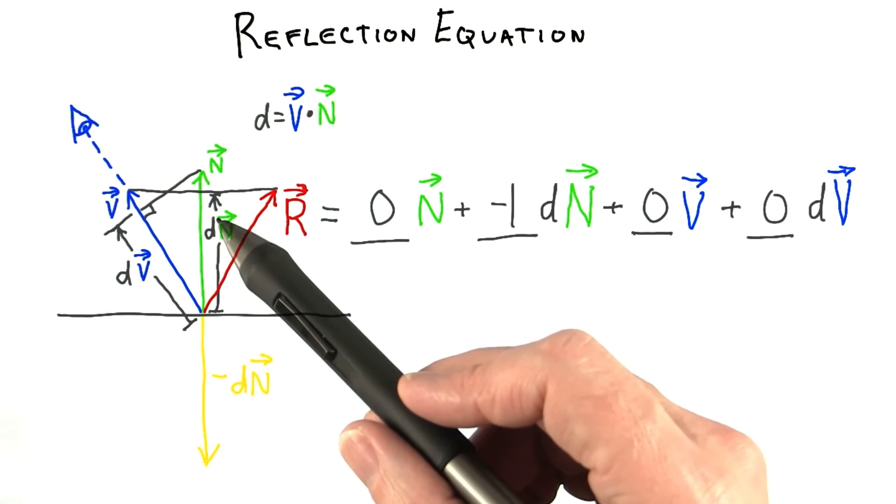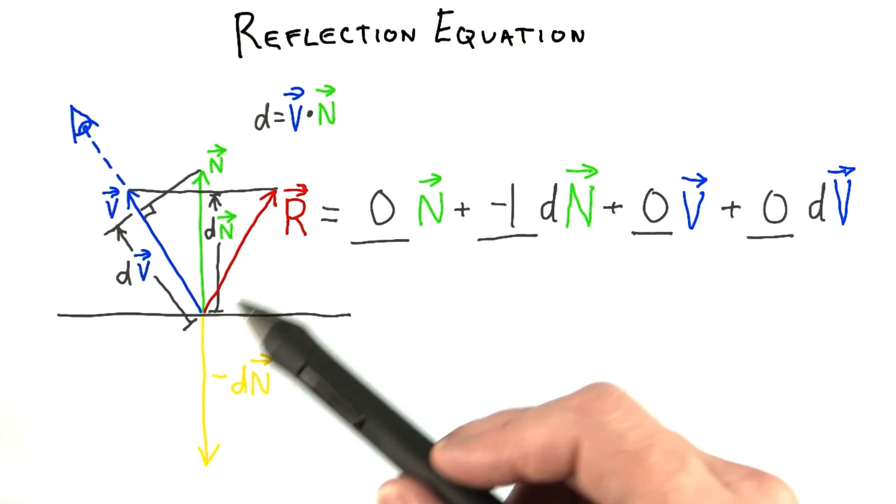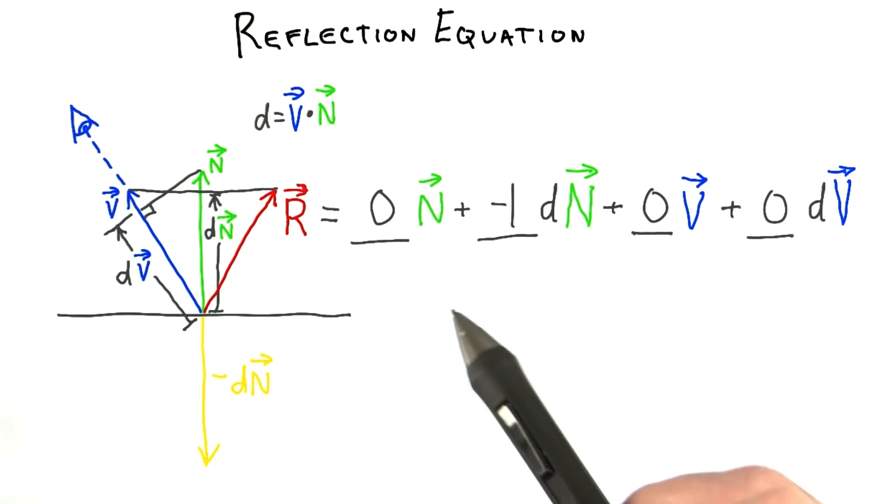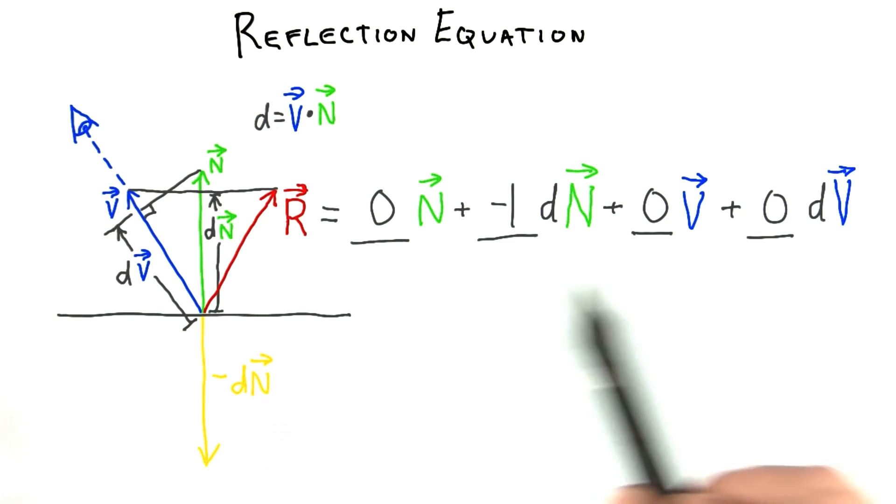For example, if you think a single copy of the dn vector negated is the same as the r vector, you would put 0, negative 1, 0, 0. Here's a hint: this answer is not correct.